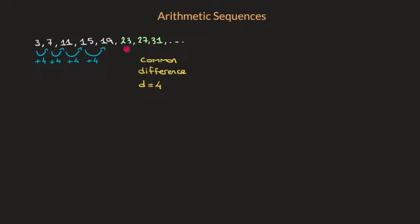It's quite easy to find the next term of the sequence, but what if I were to ask you what's the 101st term? One way of finding out would be to keep on adding 4 until we reach the 101st term, but that would take a bit of time. So instead, we learn about the formula for the nth term of an arithmetic sequence.